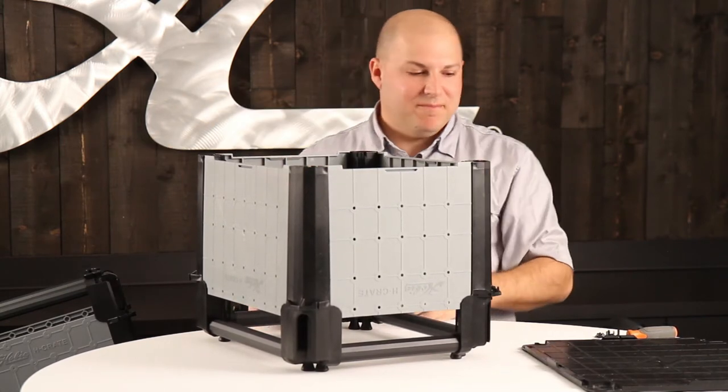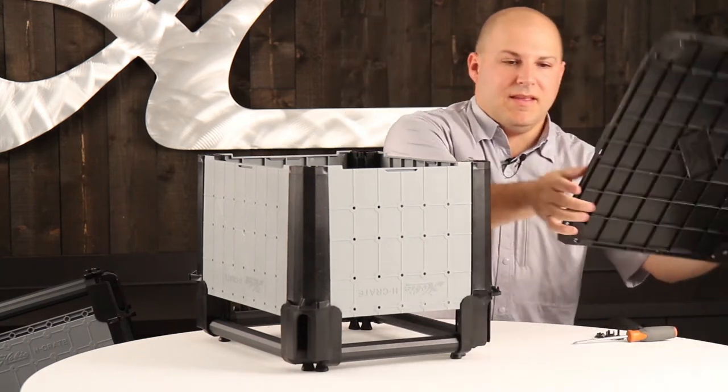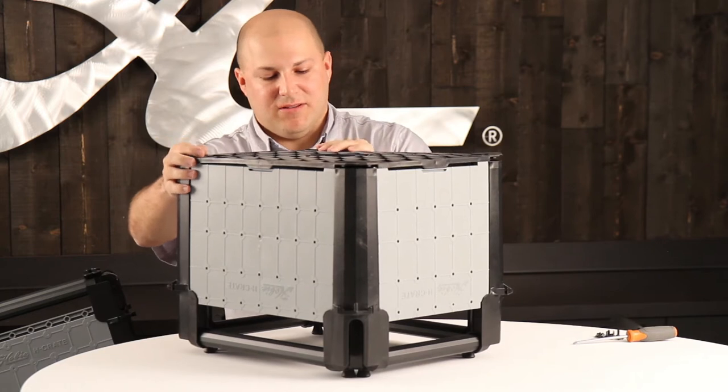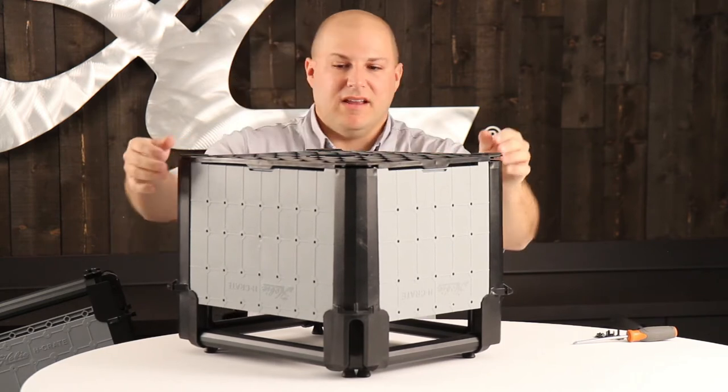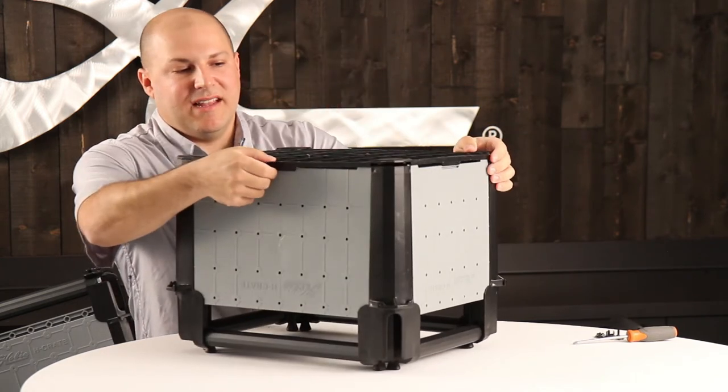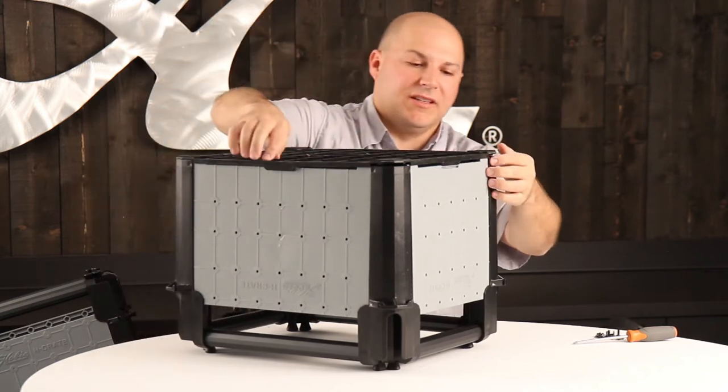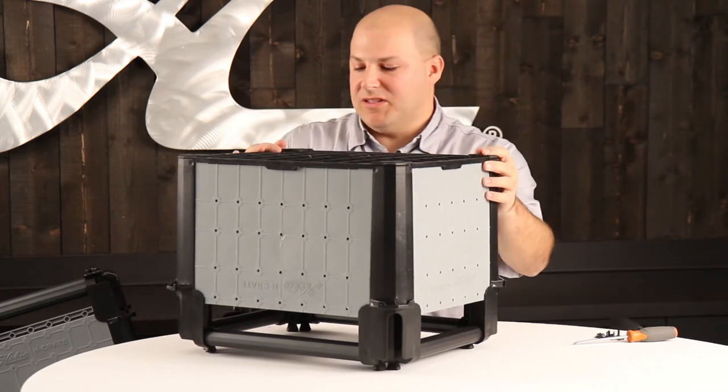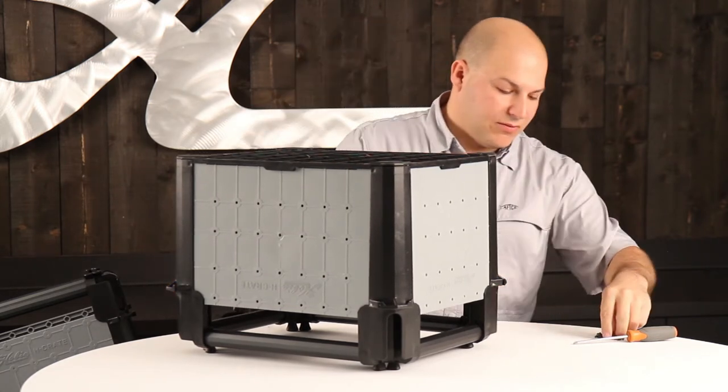Now you're ready to assemble the bottom. The bottom is pretty simple. It just aligns with the corners and the sides. You may need to push the side tabs in to get the bottom cleared past them and help it align. Once you've done that, you can begin installing the screws.